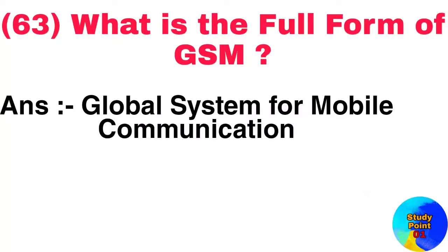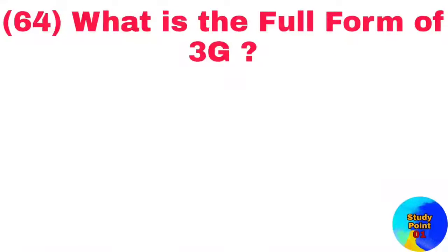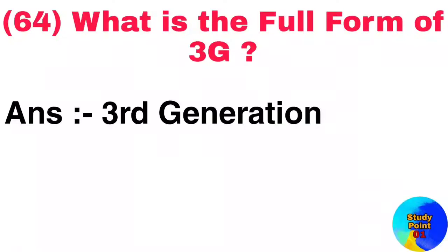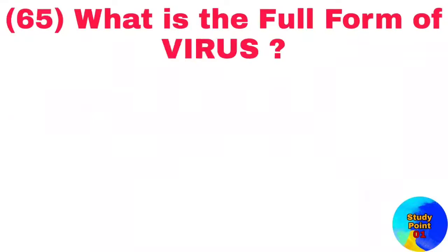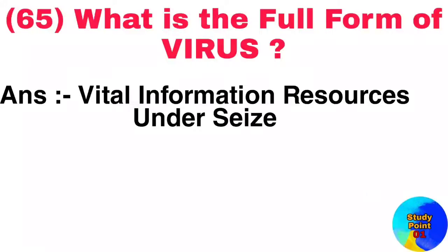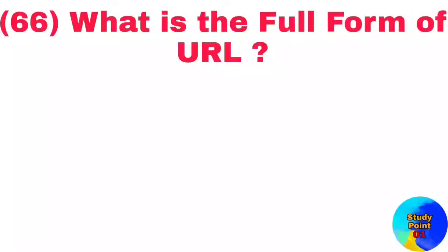Question number 63: What is the full form of GSM? Answer: Global system for mobile communication. Question number 64: What is the full form of 3G? Answer: Third generation. Question number 65: What is the full form of VIRUS? Answer: Vital information resources under seas.